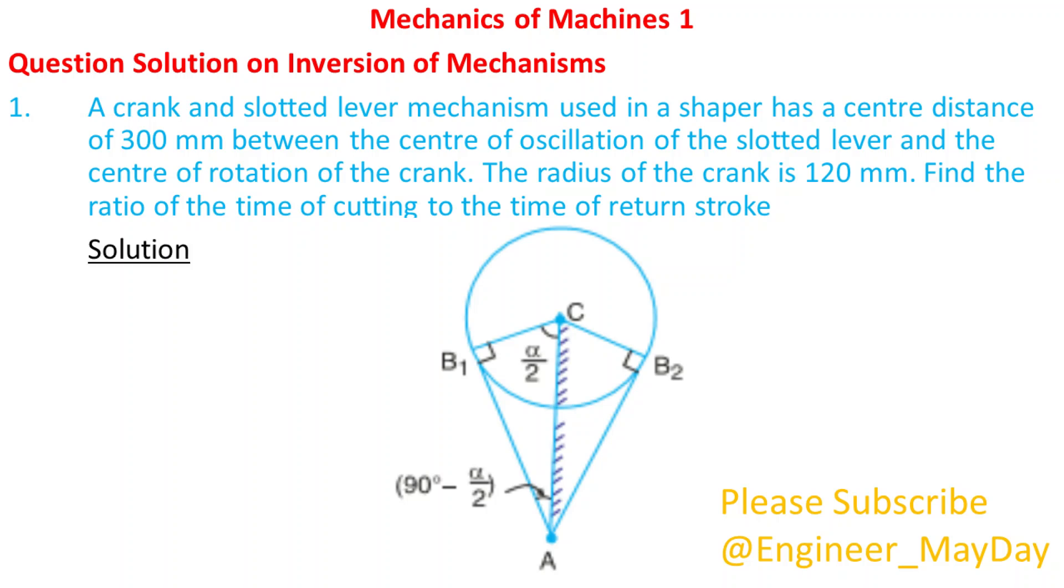Solution. Given: AC equals 300 millimeters, CB1 equals 120 millimeters.